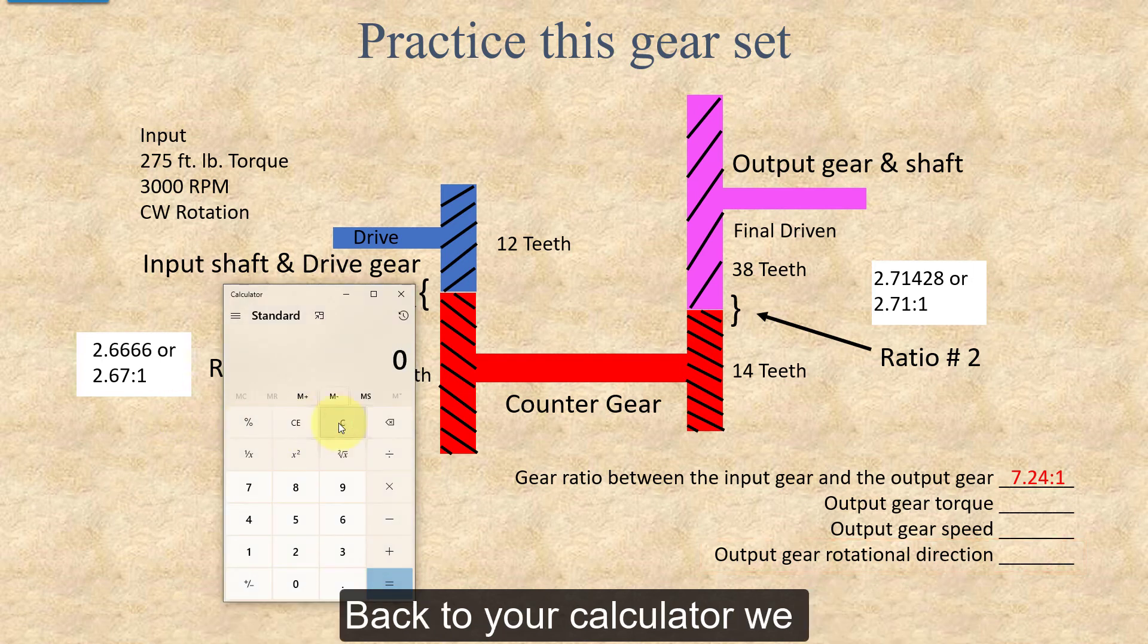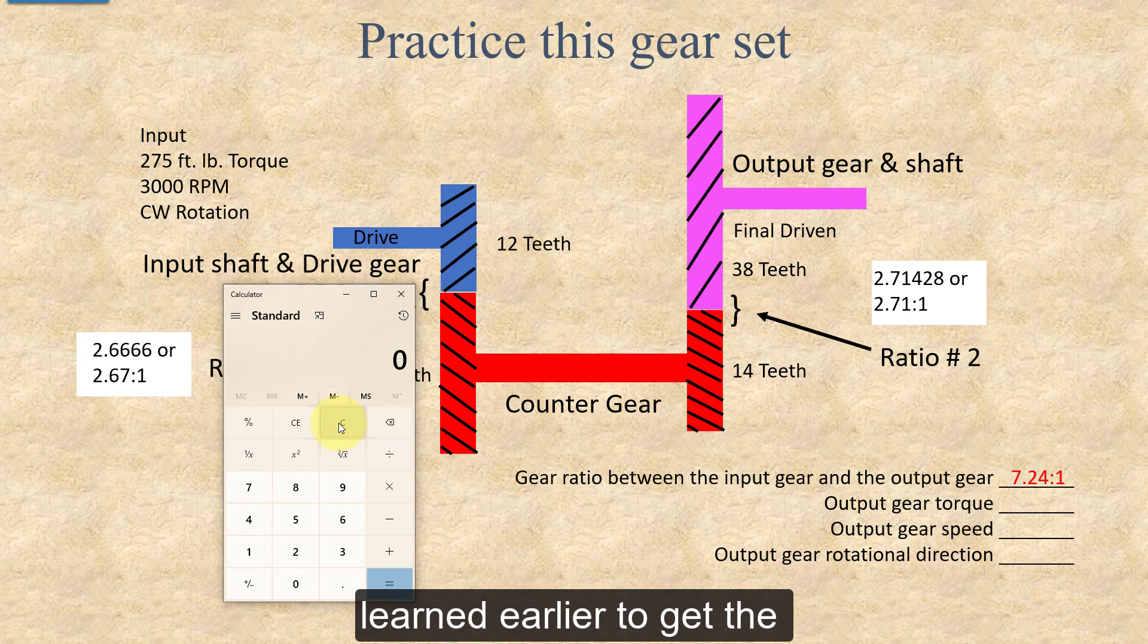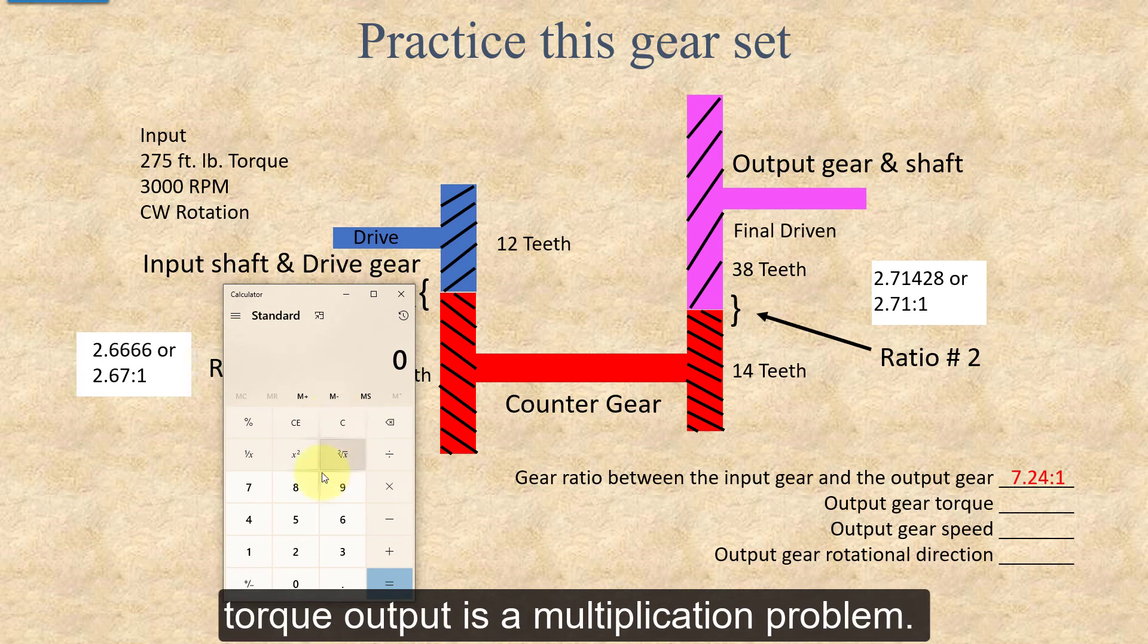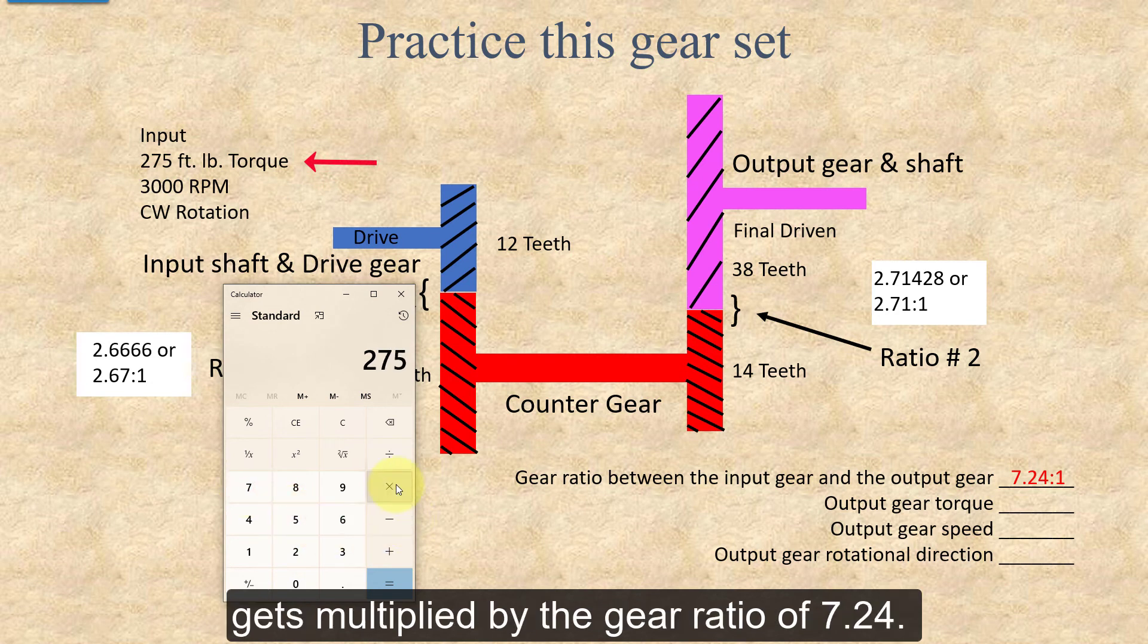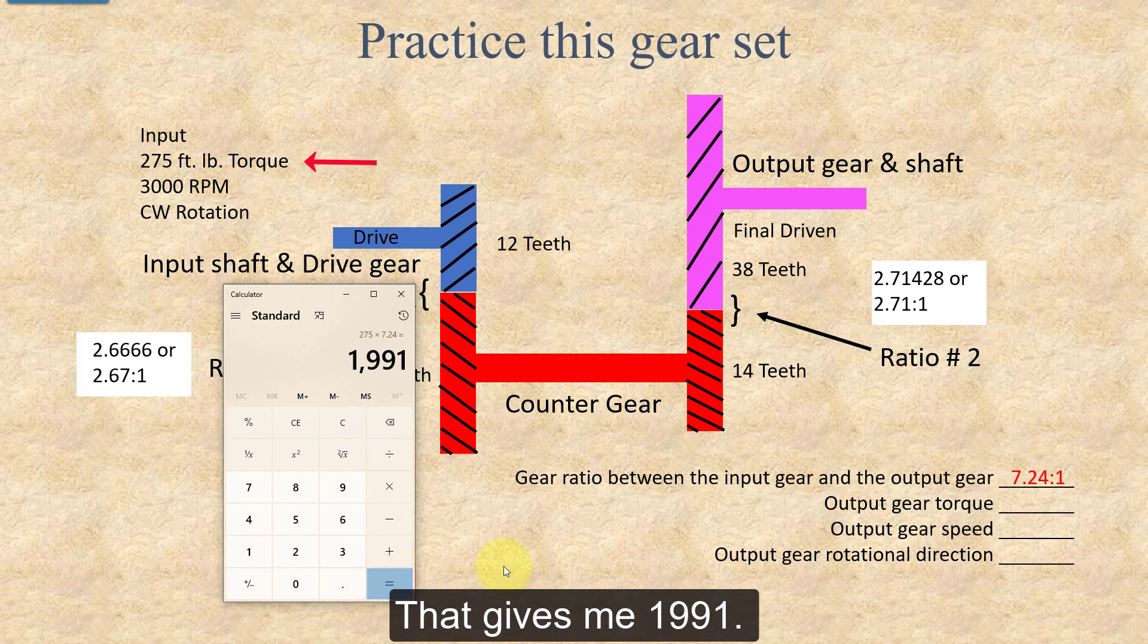Back to your calculator, we learned earlier to get the torque output is a multiplication problem. My input torque of 275 foot-pounds gets multiplied by the gear ratio of 7.24. That gives me 1,991.